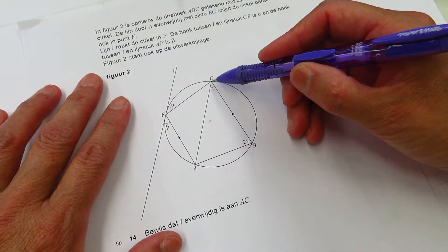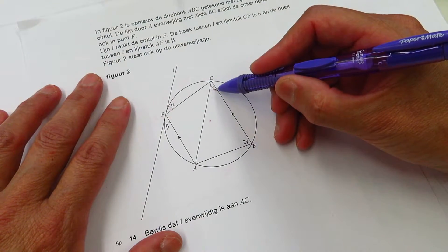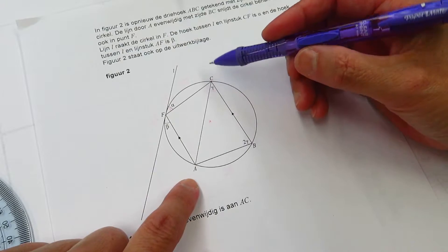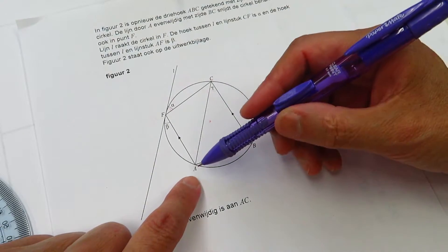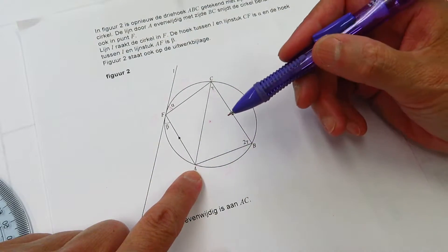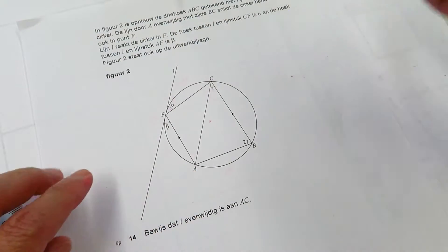angle ACB. We know the angle C is gamma, and we know the angle CBA, angle B is 2 gamma.